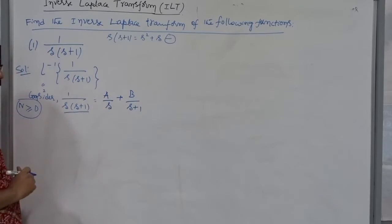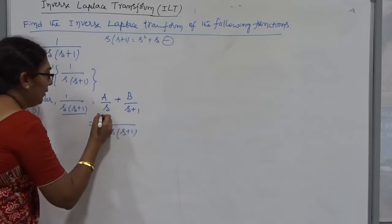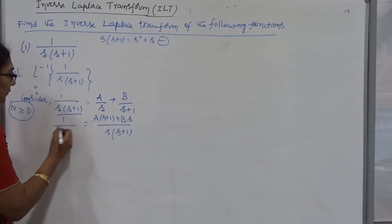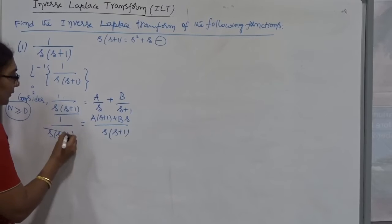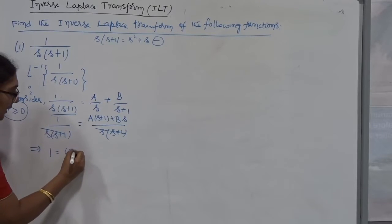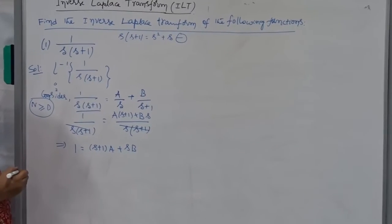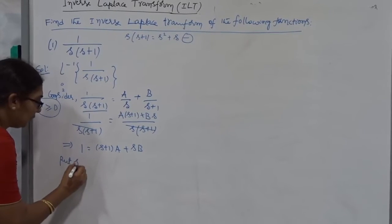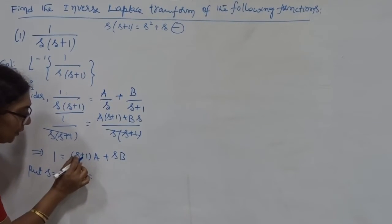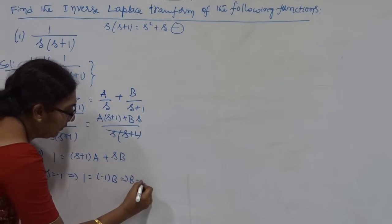After applying the partial fraction, multiply both sides by S into S plus 1. What we get is: 1 equals A into S plus 1 plus B into S. I have to give different values of S to find A and B. Suppose you put S equal to minus 1: minus 1 plus 1 is 0, so A term vanishes, giving 1 equals minus 1 into B. Therefore B equals minus 1. Similarly, put S equal to 0: B term vanishes, giving 1 equals A. Therefore A equals 1.